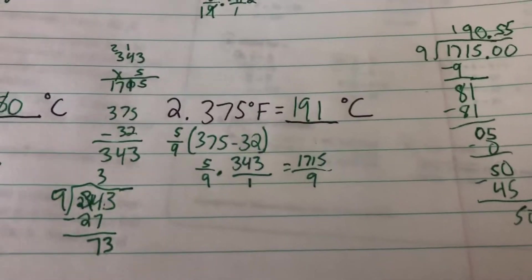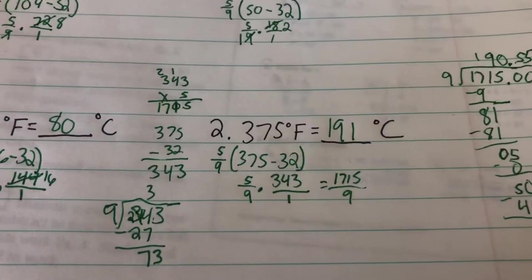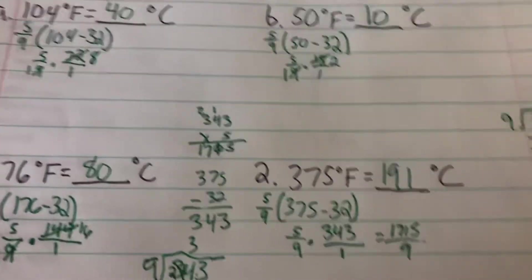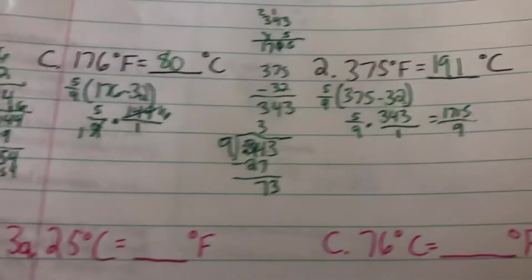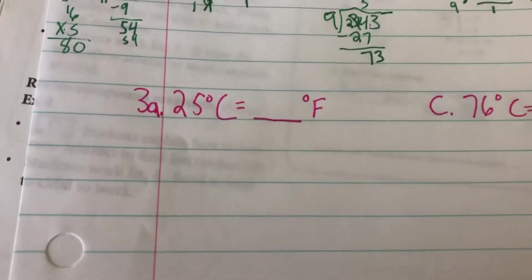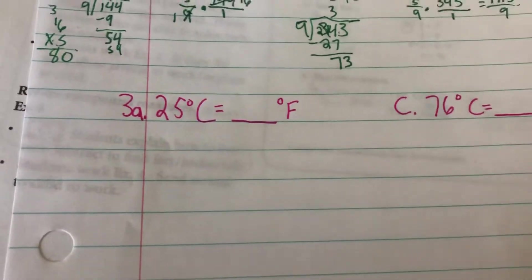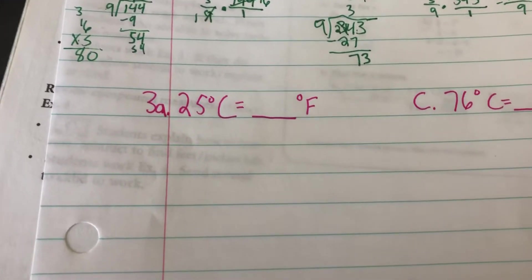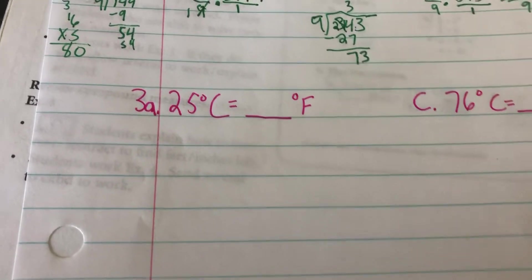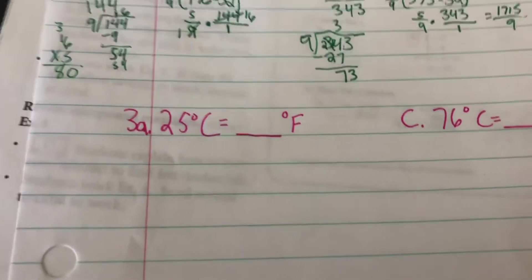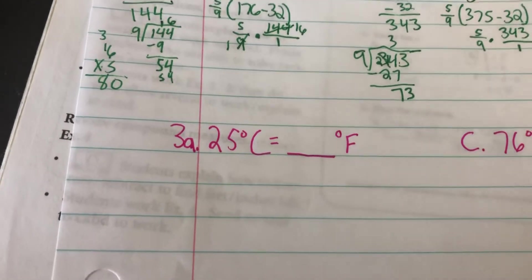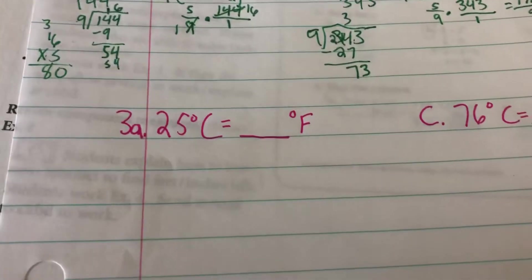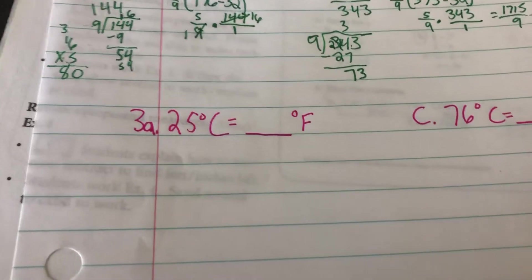I know there's a lot of division on that one, but sometimes it's going to work out that way and we know how to do it, so it's no problem. Okay, 3A. It wants us to do what we did yesterday, which is convert Celsius to Fahrenheit. If we have forgotten our Celsius to Fahrenheit formula, it is just the opposite. It is 9/5 times C plus 32.